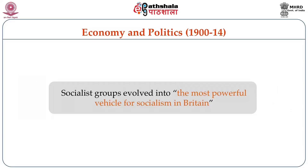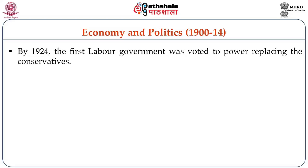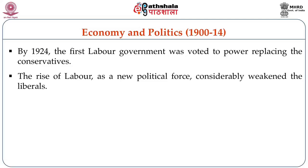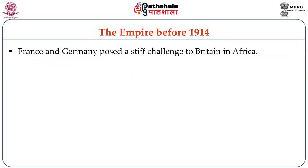Socialist groups evolved into the most powerful vehicle for socialism in Britain. By 1924, the first Labour government was voted to power, replacing the Conservatives. The rise of Labour as a new political force considerably weakened the Liberals. The British Empire, before 1914, faced challenges from countries in Europe, notably France and Germany, who also posed a challenge to British superiority in Africa and British governance and administration there.